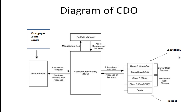One difficulty with CDOs is that they are very difficult to value. It's straightforward to value a bond — you take the present value of future cash flows — but it's difficult to measure the risk or value of some tranches. You have to consider many scenarios: what happens if interest rates fall or rise, or the economy goes bad and people stop repaying their mortgages? How many will default? How much money goes into the CDO and how much comes out?